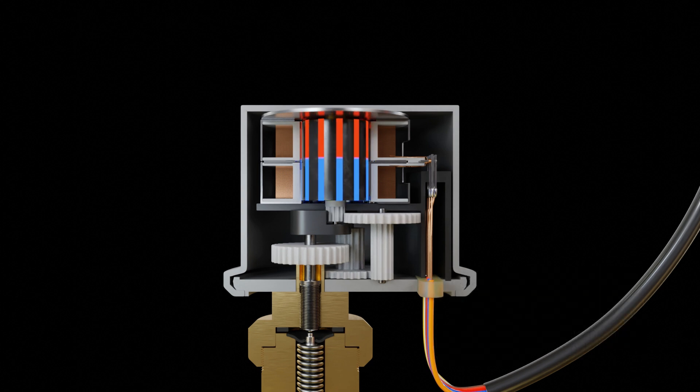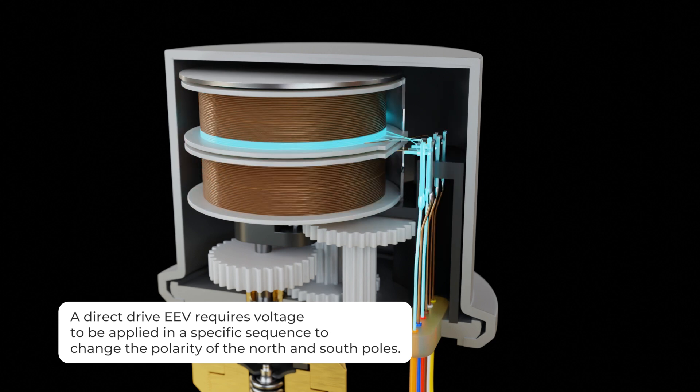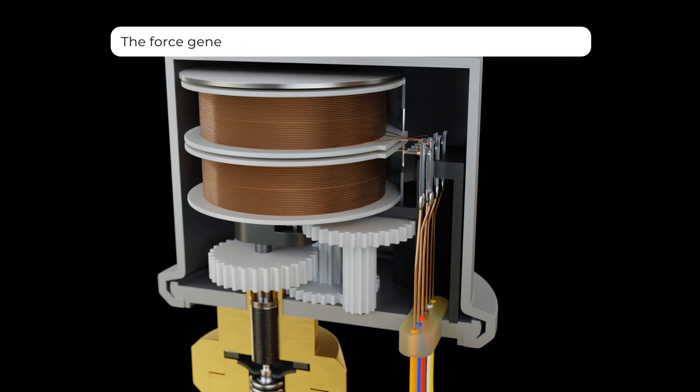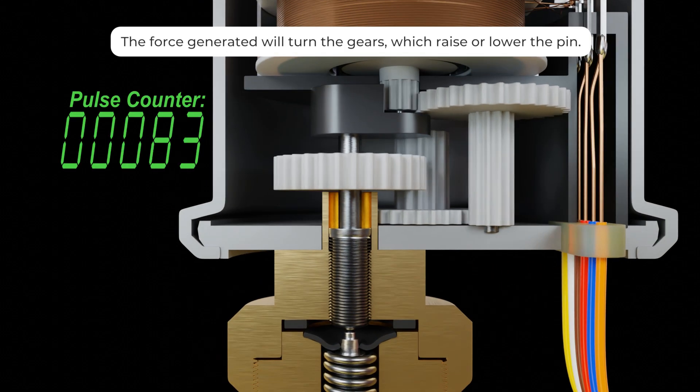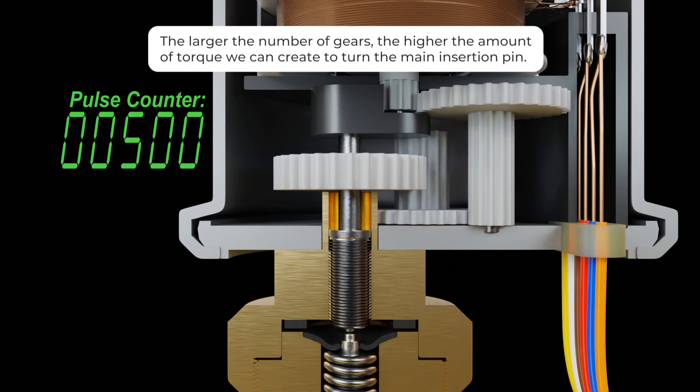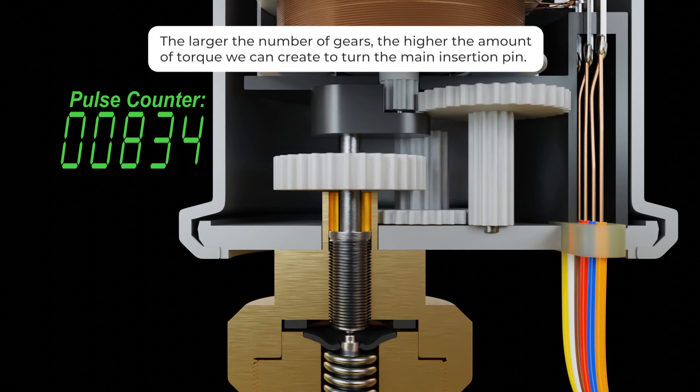As with the EEV with an indirect motor, a direct drive requires voltage to be applied in a specific sequence to change the polarity of the north and south poles. The force generated will turn the gears which raise and lower the pin. The larger the number of gears the higher the amount of torque we can create to turn the main insertion pin.